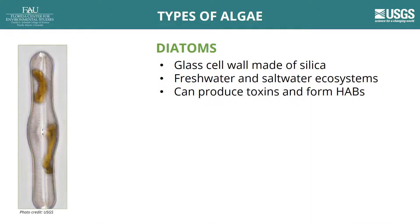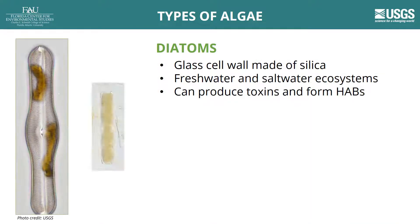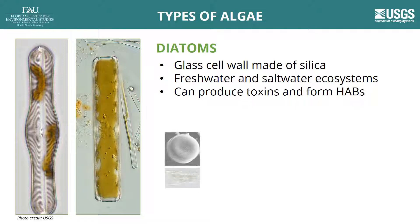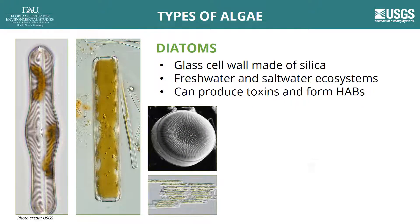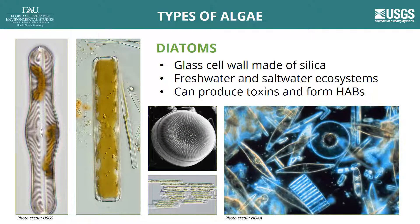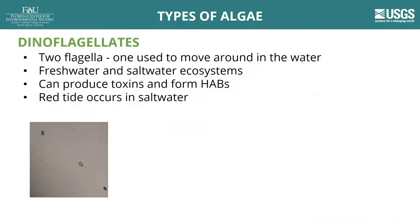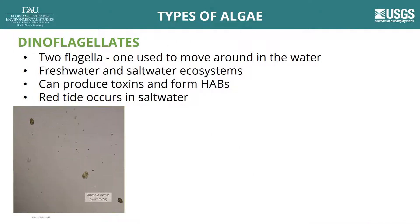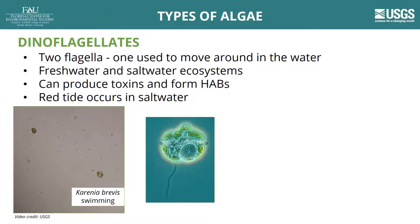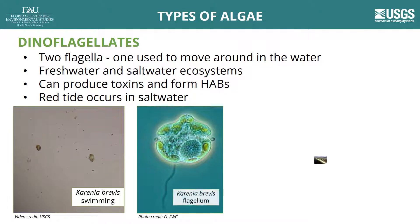Diatoms are the first type of algae that we will discuss. They can live in both freshwater and saltwater, with most common blooms occurring in saltwater. When you look at diatoms under a microscope, you can see that each cell is surrounded by a glass wall made of silica. Some diatom species can form HABs and produce toxins.